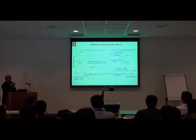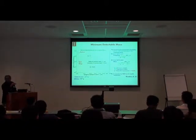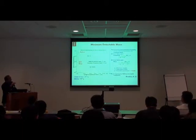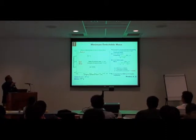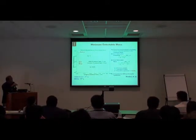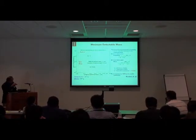If you can get a Q of 500, then you could detect masses down to 10 to the minus 17 grams. Just as a point of reference, most viruses have mass in the range of 10 to minus 17 to 10 to minus 15 grams. A single protein at 100 kilodaltons would be about 10 to the minus 19 grams, and one DNA base pair is about 10 to the minus 15.